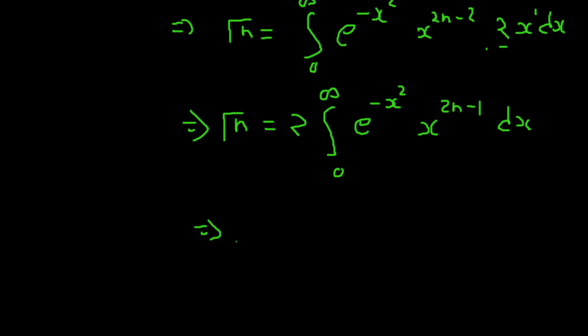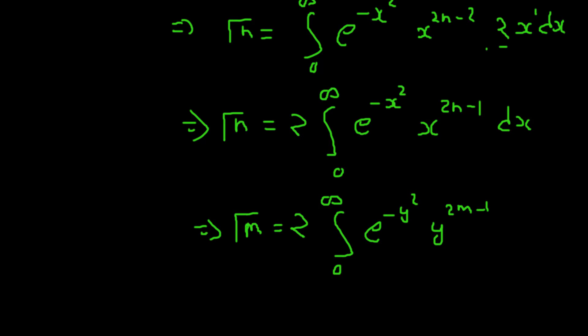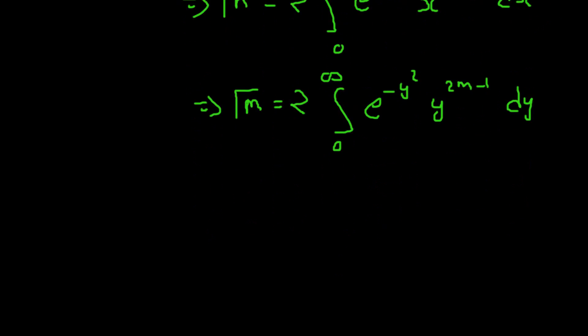From this we can write the value of gamma(m) similarly by inspection. It will be the integral from 0 to infinity of e to the power minus y squared, times y to the power 2m minus 1, dy.